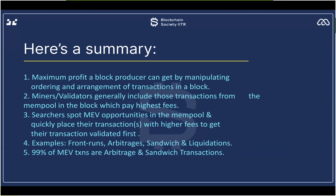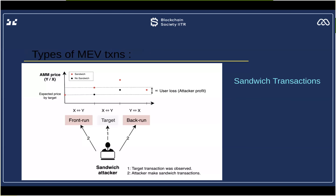Examples of MEV include front-runs, arbitrage, sandwich, and liquidation events — these are the four general types of MEV transactions. An interesting factor is that 99% of MEV transactions are arbitrage and sandwich transactions. There is also a term called gas golfing, where you program transactions to use the least amount of gas.